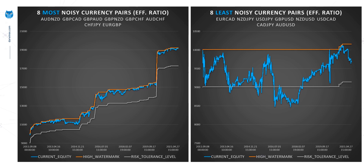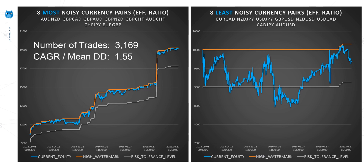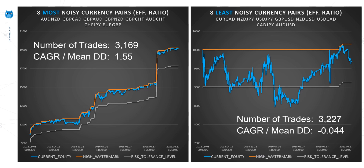On the right hand side are the least noisy currency pairs — the assets that are much more suited to trend following strategies and not suited to mean reversion. You can clearly see that in the results; it looks more like a random walk. The number of trades for the left hand chart was just over 3,000, and the CAGR over mean drawdown increased from about 0.25 for all 28 pairs up to 1.55 — a really significant increase. On the right hand side with 3,200 trades, we have a negative value for CAGR over mean drawdown, representing a large degradation.